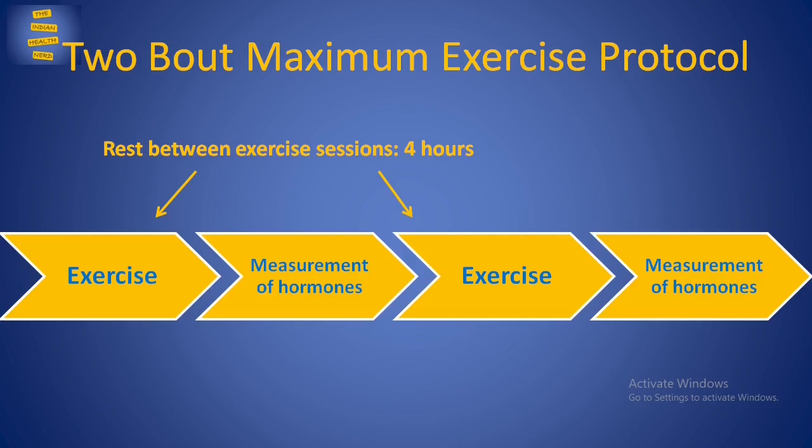It is interesting to note that as per this study, subjects in the non-functional overreaching category had symptoms lasting between six weeks to eight months, and those in the overtraining category had symptoms lasting for more than two years. This challenges the conventional two-month threshold used for defining overtraining syndrome. Apart from the above test, it is also important to do tests for ruling out other medical conditions, since many medical conditions can cause a fall in an athlete's performance and mimic the symptoms seen in overtraining syndrome.